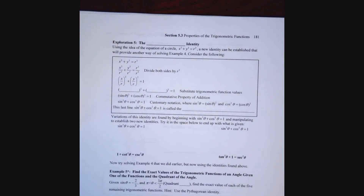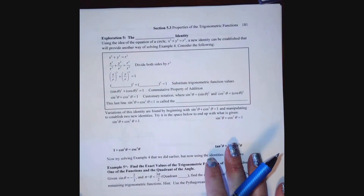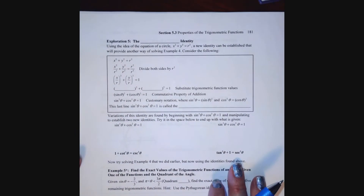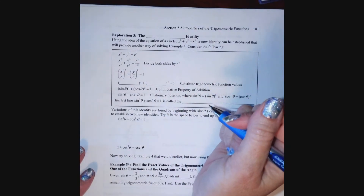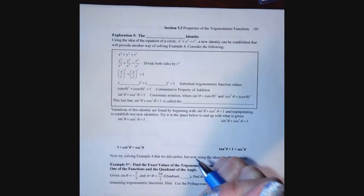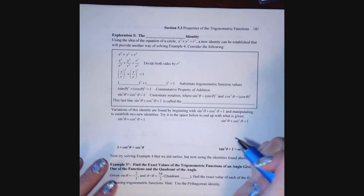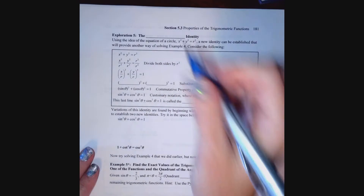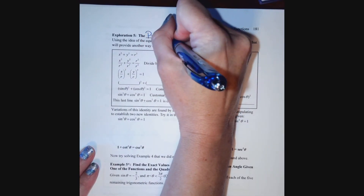Welcome back to chapter 5 section 3. The original video was unexpectedly cut off with just two pages remaining, so this addendum covers the last two pages of your notes. With this fifth exploration, we're going to establish our Pythagorean identity.